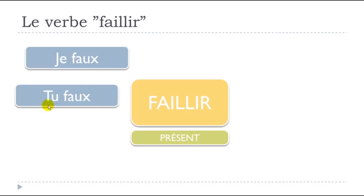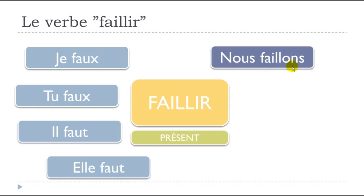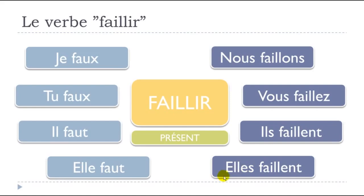So faillir in the present form goes like: je faux, tu faux, il faut, elle faut, nous faillons, vous faillez, ils faillent, elles faillent. Before continuing, let's admit that it is really rare to hear or see these forms. They do exist, so that's the reason why I thought it was important to show them. One more time: je faux, tu faux, il faut, elle faut, nous faillons, vous faillez, ils faillent, elles faillent.